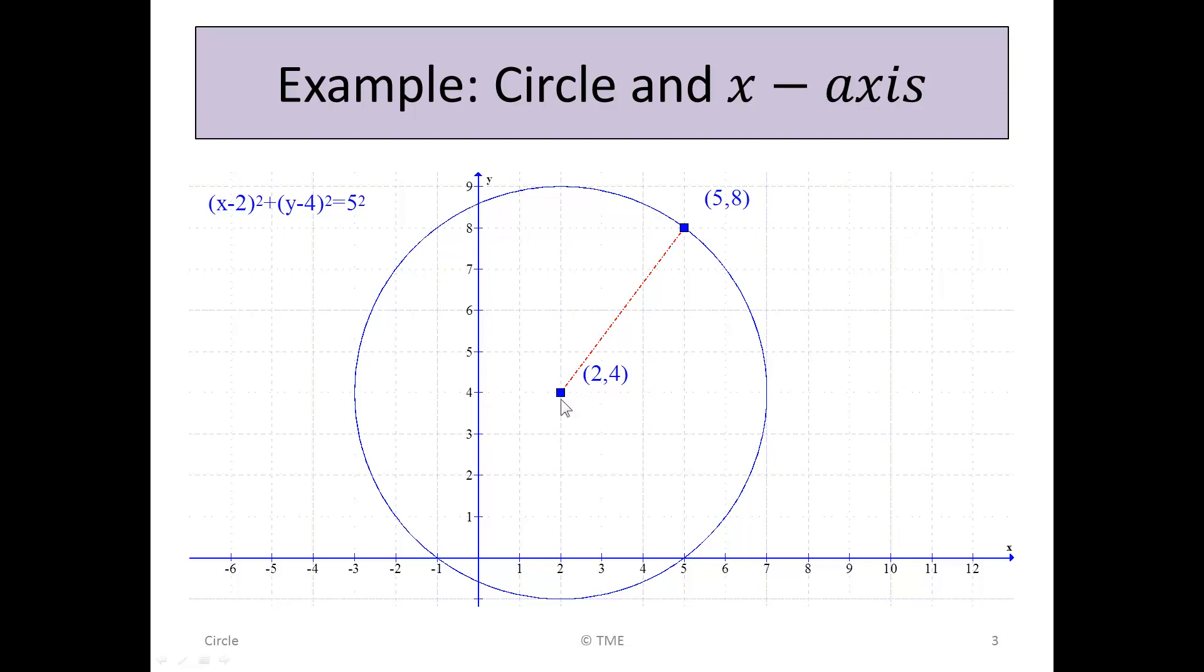Here's an example of a circle and the x-axis. The circle is at center (2, 4) with the radius of 5 and it cuts the x-axis here at approximately -1 and 5. How would we solve that algebraically?